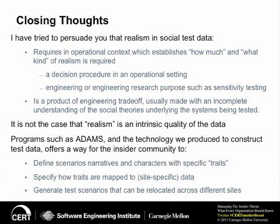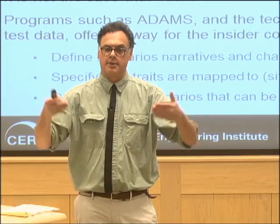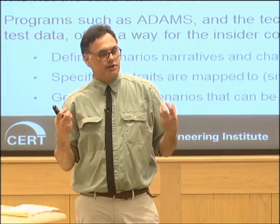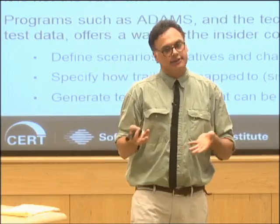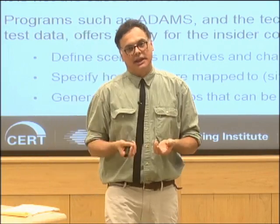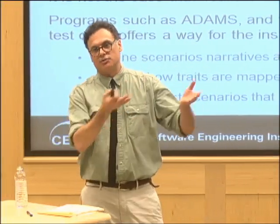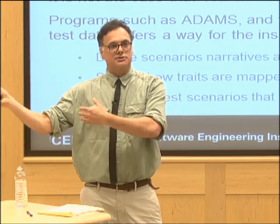So here are my closing thoughts. I've tried to persuade you that when we talk about realism in social data, we can construct it — it's not something that is real in itself, but it has to be constructed. To really do this, we need two things: an operational context in which we can understand what the systems are doing that we're feeding the data to, so we can make trade-offs about how much realism is necessary and how much might be excess; and engineering goals — we need to know what's the purpose of the data and what are we trying to reveal from it. Realism is a relational property of the data to a real phenomenon and to the way it's being used in a particular system.